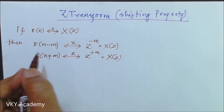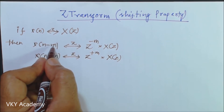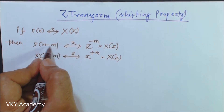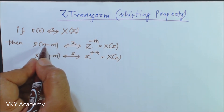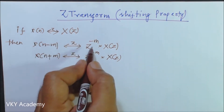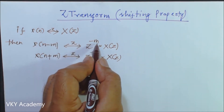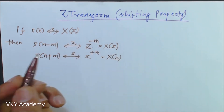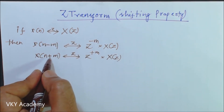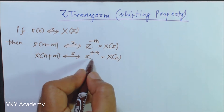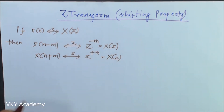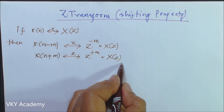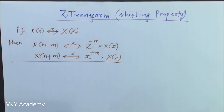So if a number m is shifted or delayed by m units from the variable n, then z to the power minus m will be multiplied with X of z. And if it is added, or advanced by m units, then z to the power plus m will be multiplied with X of z. This is the shifting property of Z transform. Let us now prove this property.